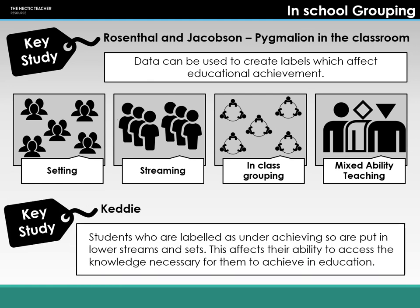Keddie did a study applying the idea of speculative labelling to in-school groupings. Keddie found that students who were speculatively labelled as underachieving were put into lower streams and sets. This then became a self-fulfilling prophecy because those in lower streams and sets weren't given access to the knowledge necessary for them to achieve higher in education. The speculative label led to placement in lower sets, which then led to educational underachievement.